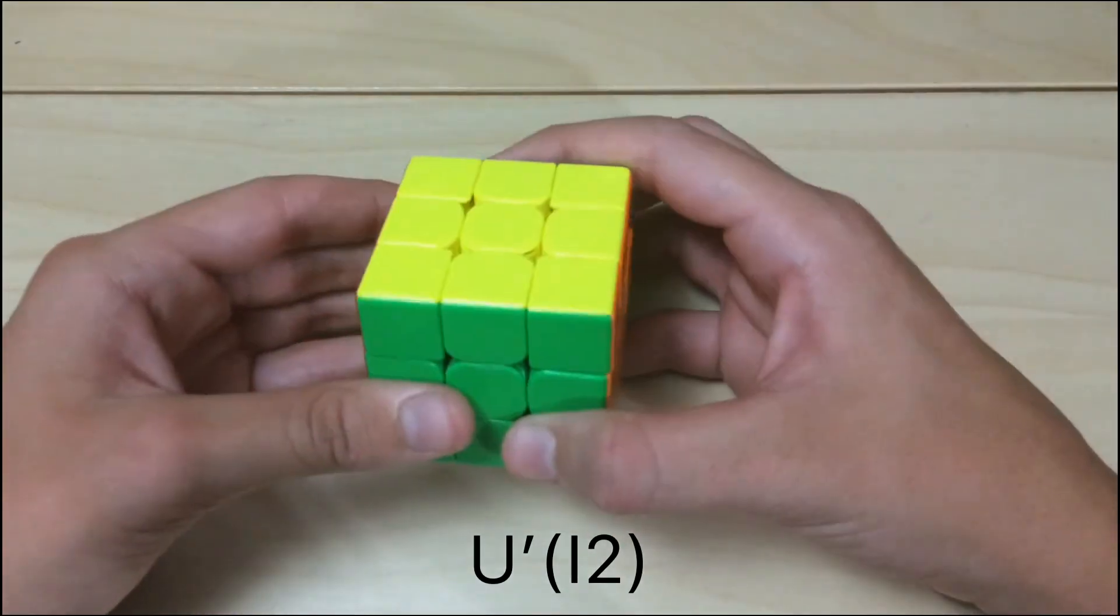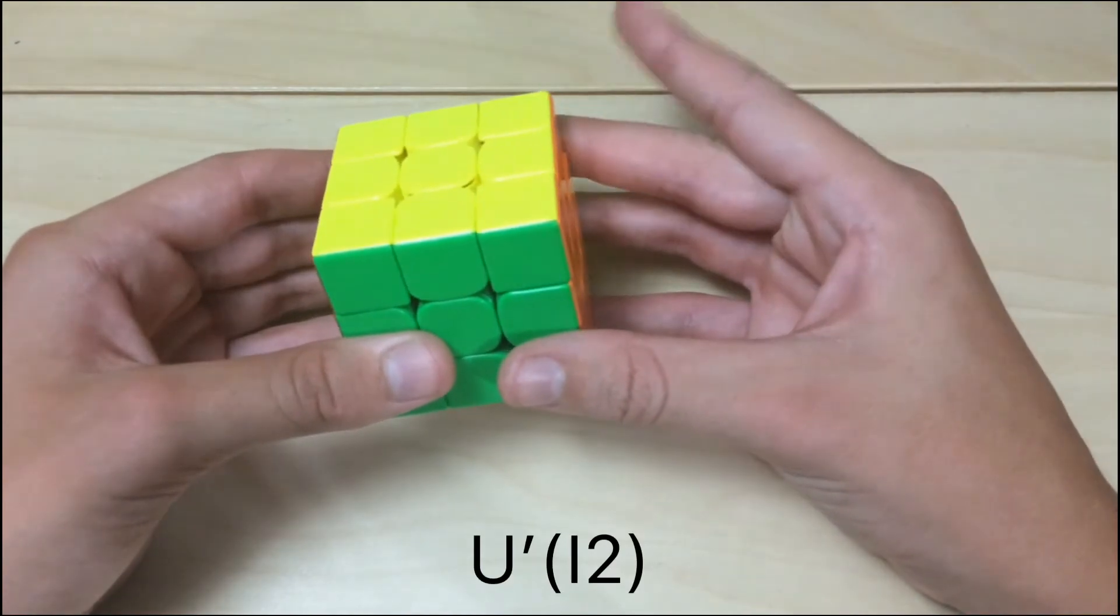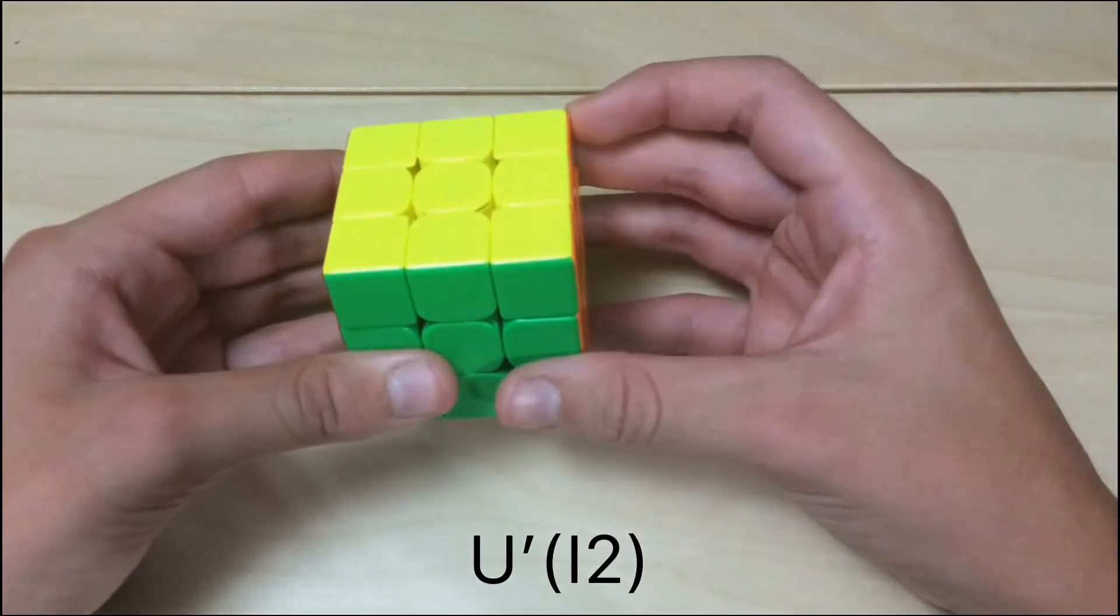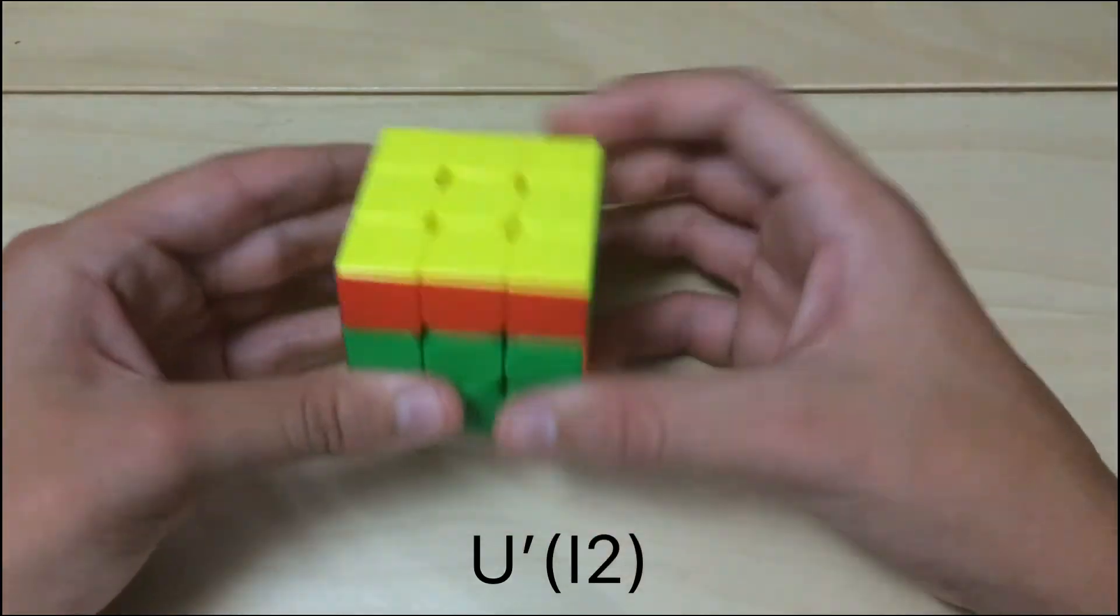after writing the U prime, I would put in parentheses, one, or index on two. So index finger on the two piece, like this.